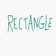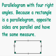A rectangle is a parallelogram with four right angles. Because a rectangle is a parallelogram, opposite sides are parallel and have the same measure.